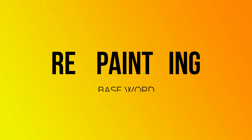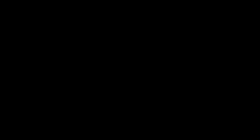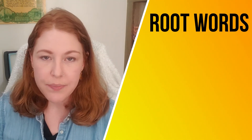Now let's take a look at the word 'repainting.' The base word is paint, and it has a single definition on its own. But if you add the prefix 're,' it means to do again, and the suffix 'ing,' meaning in the present tense. So repainting means to paint something again right now.